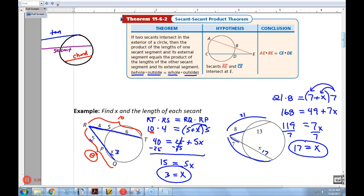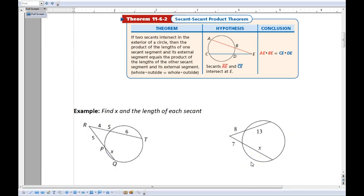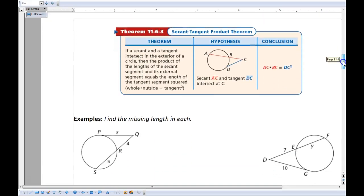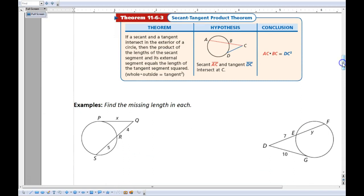So now I can find the total distance on the bottom. Total distance on the bottom is 24. So that's called the secant-secant. Very similar to the one up above, just a little bit different theorem.